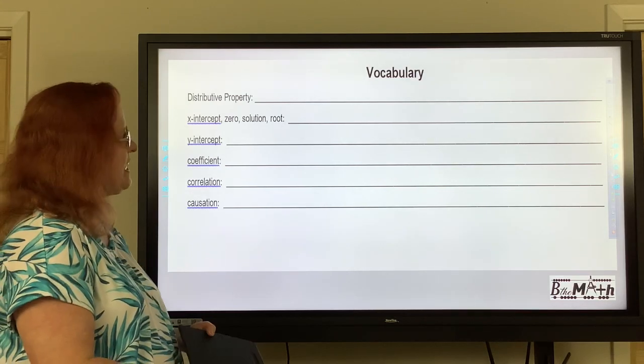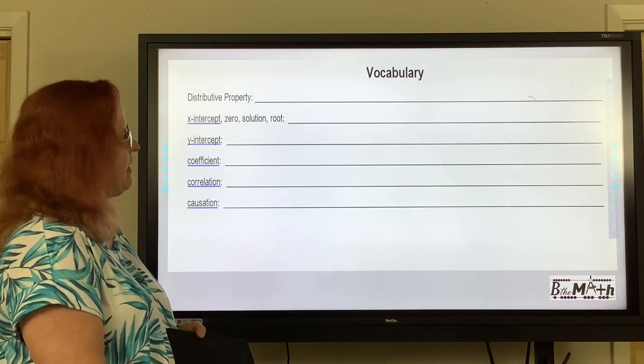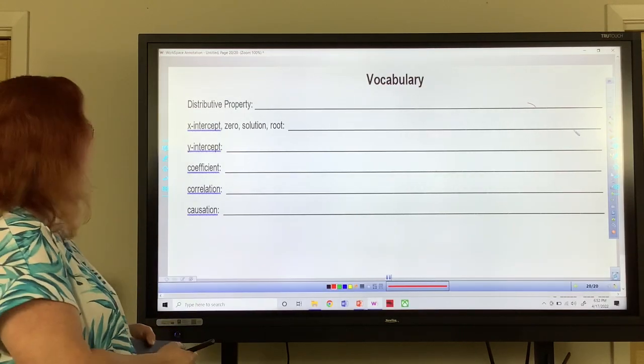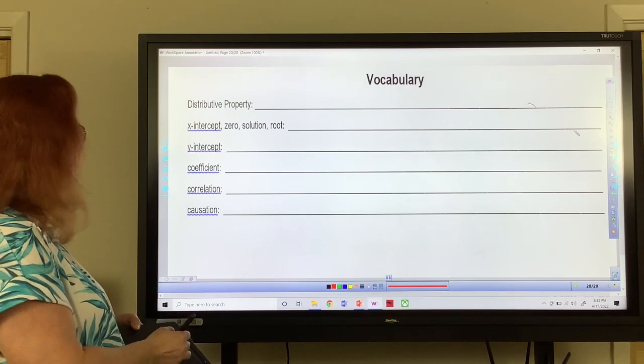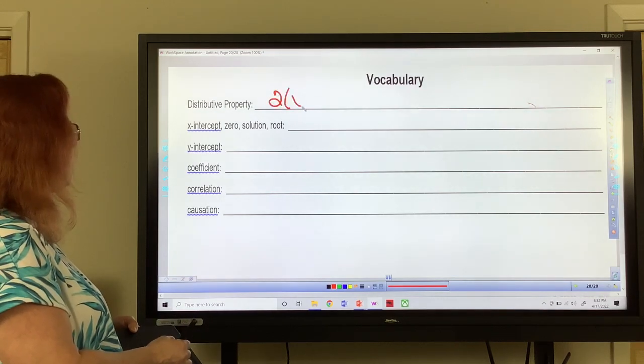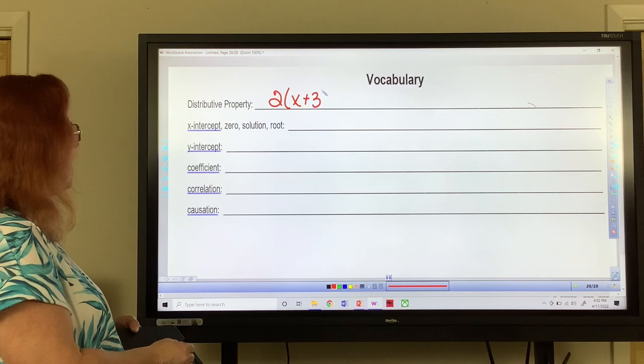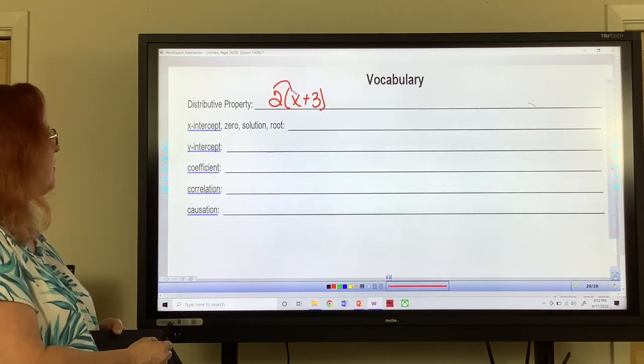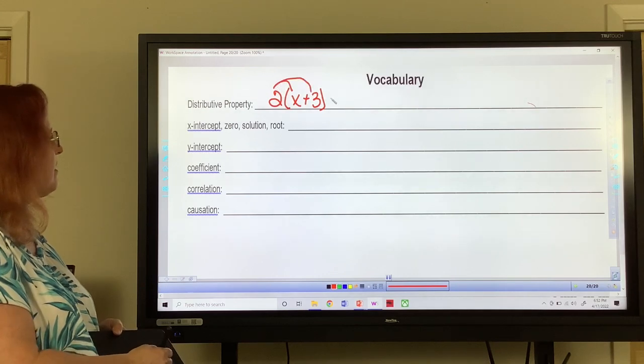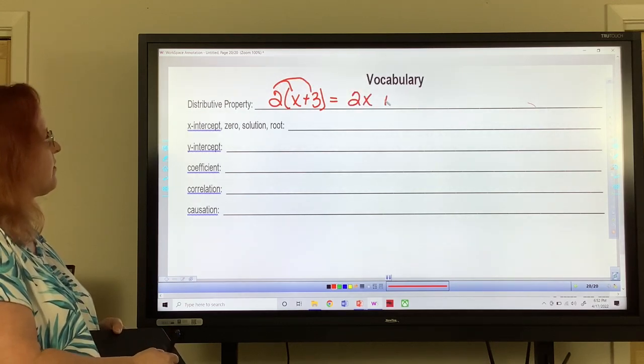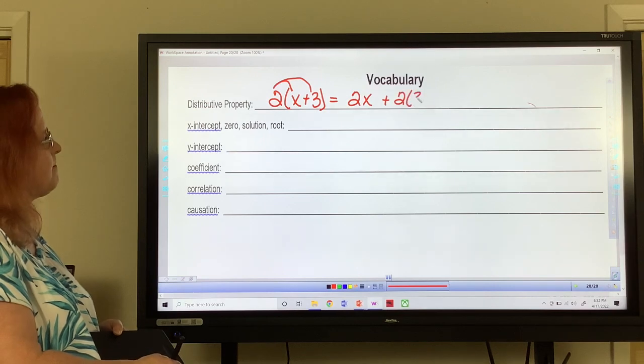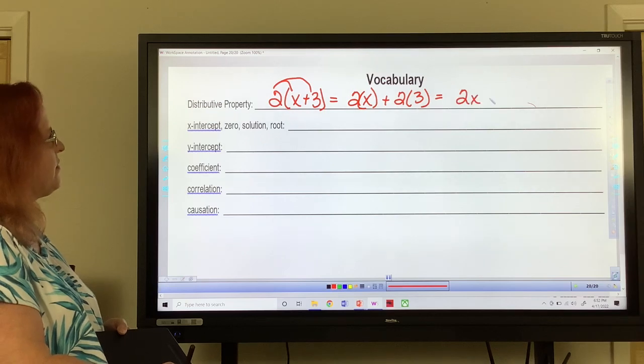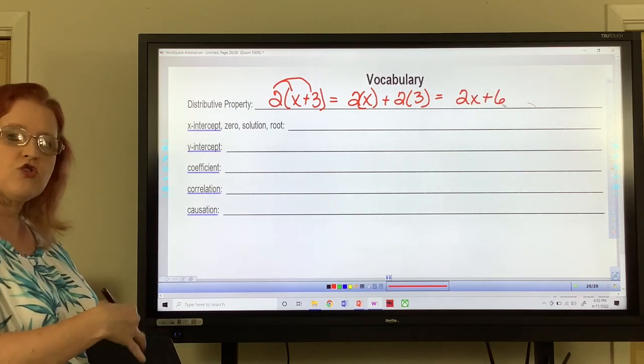Our first word is distributive property. Distributive property just means when you have 2 parentheses x plus 3, you're going to distribute that 2 through there by multiplying. So that's going to be 2 times x plus 2 times 3, so it's going to equal 2x plus 6. You're going to distribute it through.